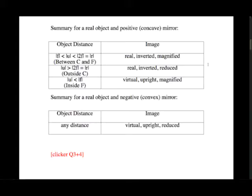For a real object and a positive concave mirror, those are the three cases. For a real object and a negative or convex mirror, the summary is very simple: any object distance will result in a virtual, upright, and reduced image. With a convex mirror the rays are all diverging, so the only possible image is virtual, and it will always be upright and reduced.